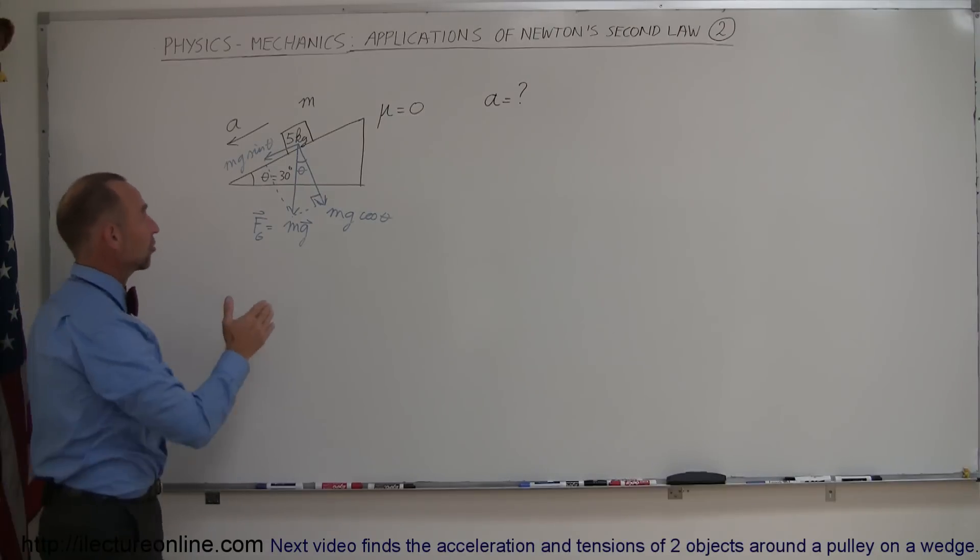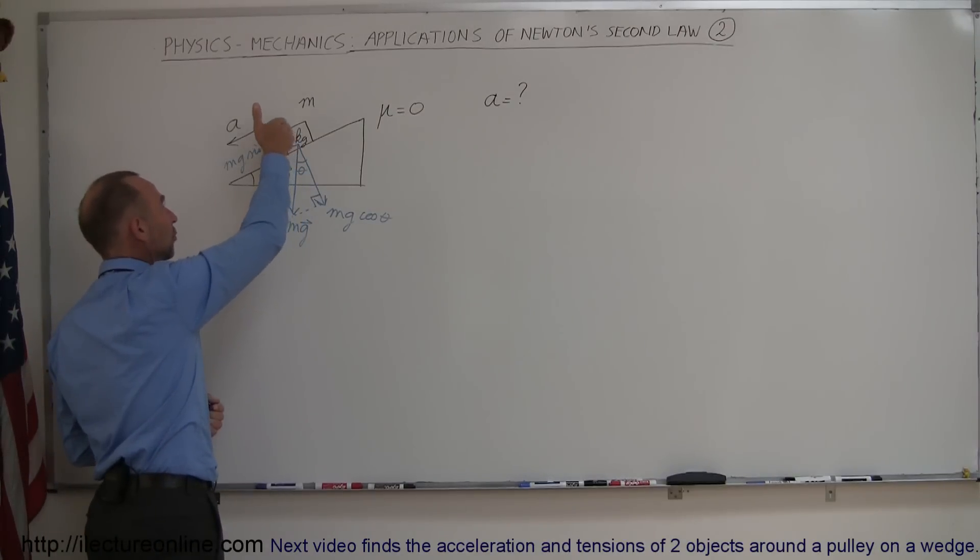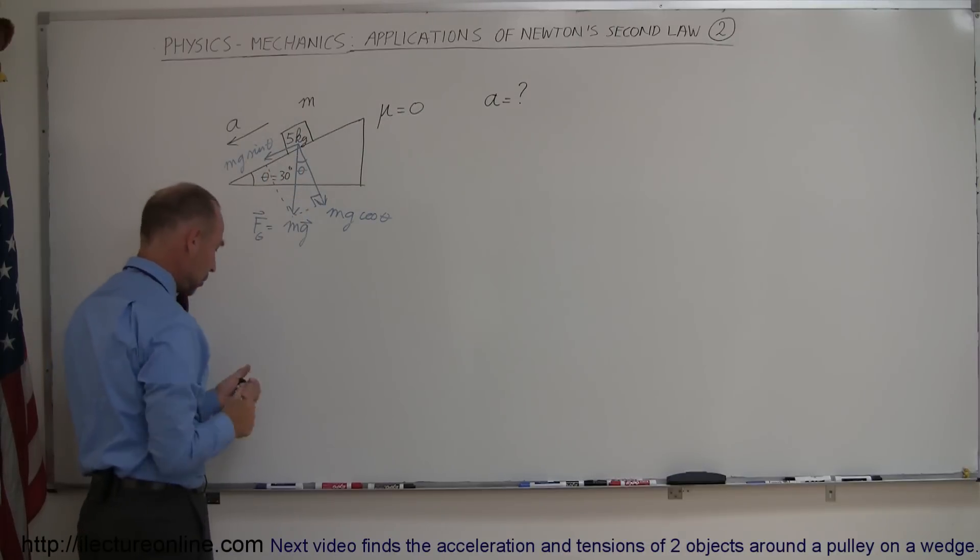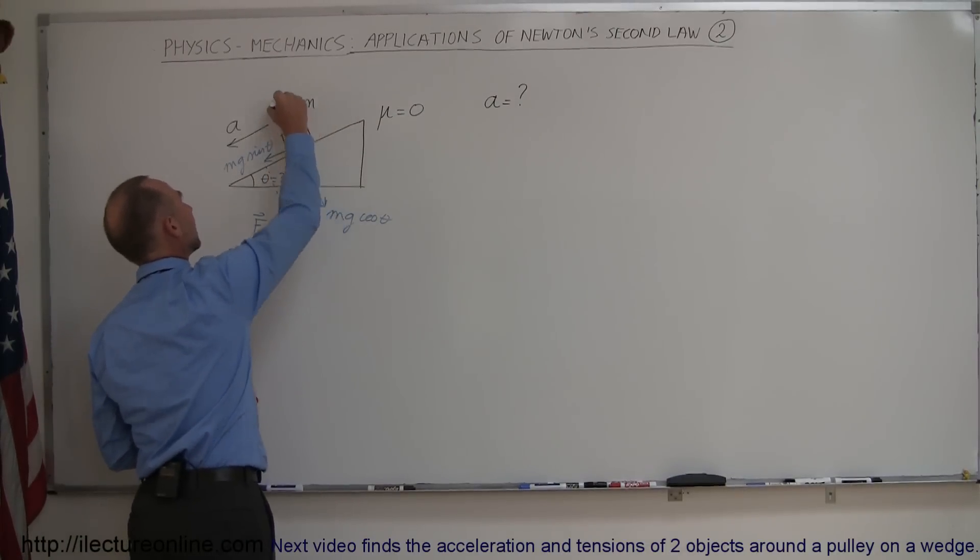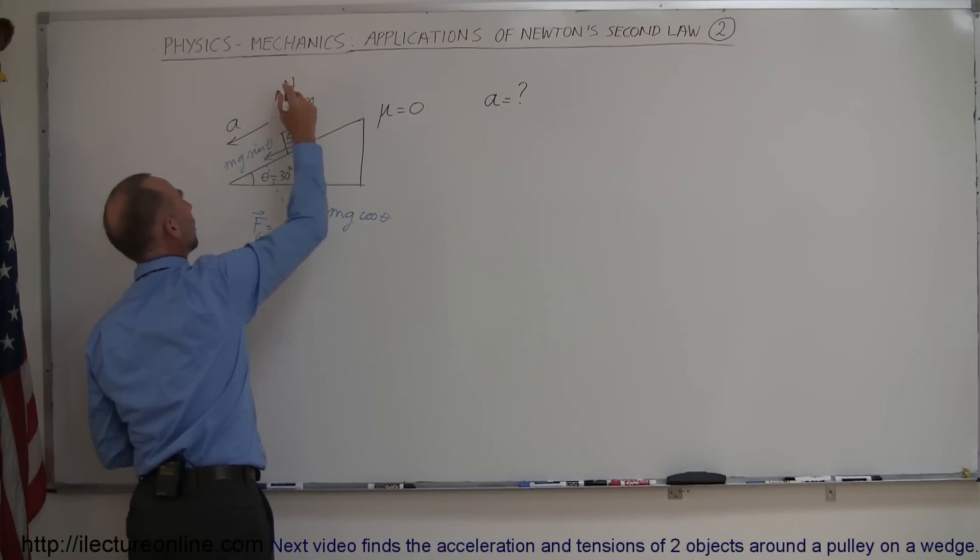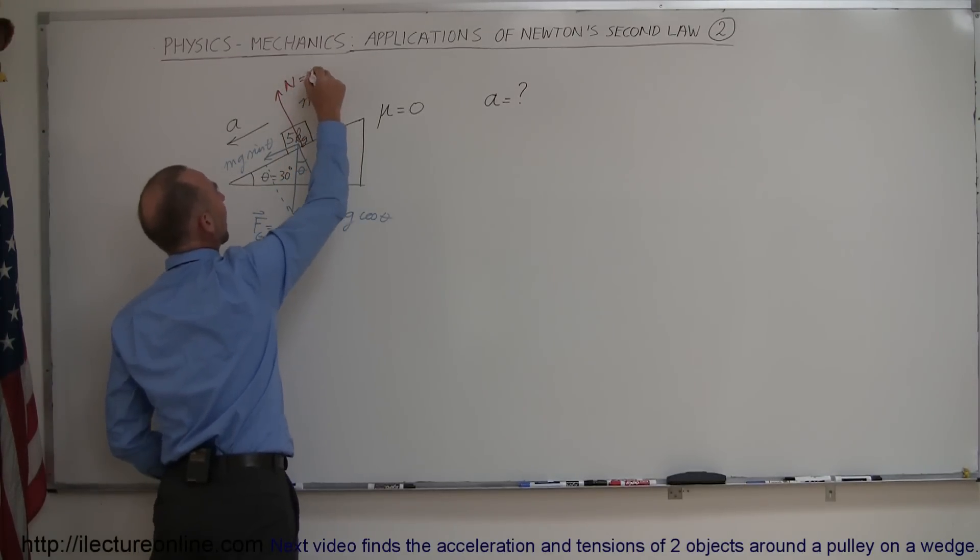Now also we have a reactionary force. So the force pushing down an incline from this mass is this vertical or perpendicular component, which means we have a normal pushing back in this direction. This is the normal from the surface pushing back, and that will also be in magnitude equal to mg cosine of theta.